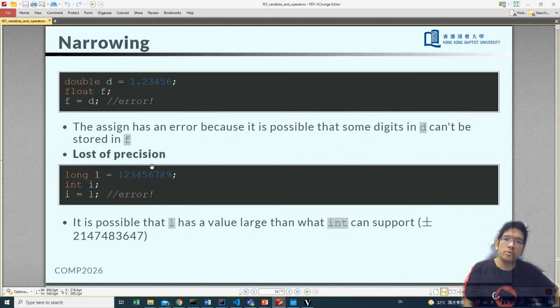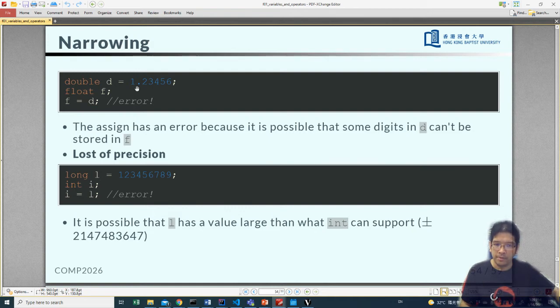However, if you do a narrowing, which means you want to use less space to host a bigger number, that could have a problem. Now let's look at this example. d equals 1.23456. This number can be hosted by a float without any problem, originally. However, when you have the line f equals to d, where you will try to put the values of d into f, that could be a problem.